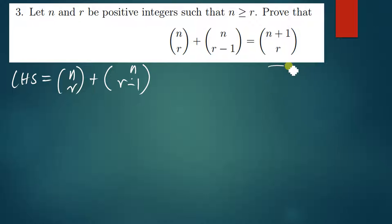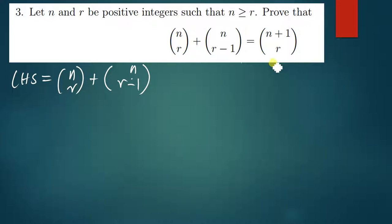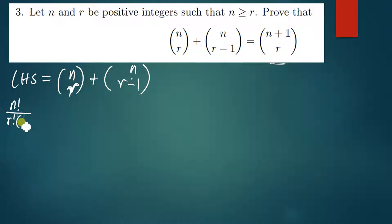In this case, we can't go from the simple part to simplify to this. You always take the complicated part to simplify it to the simpler one. So we start from this complicated part and simplify it to that. This n choose r can be written as n factorial over r factorial times n minus r factorial.